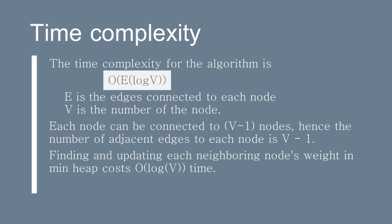Each node can be connected to V-1 nodes, hence the number of neighboring edges to each node is V-1. Finding and updating each neighboring node's weight in the min heap costs O(log V) time. Combining the above will give us O(E log V).